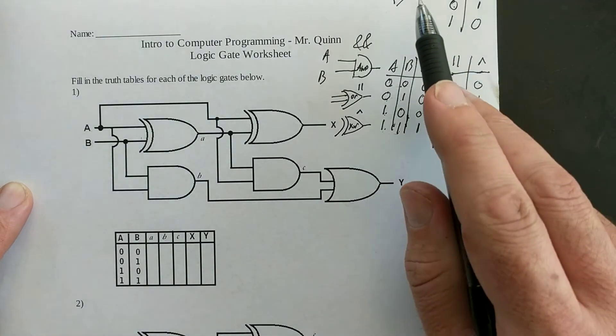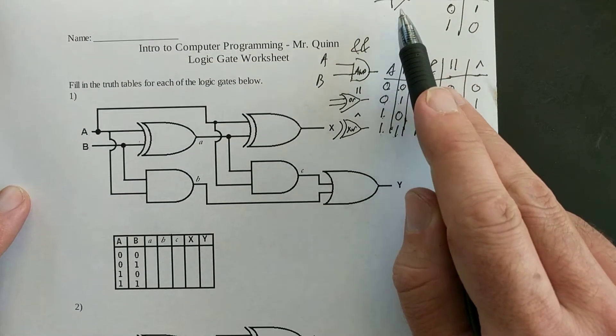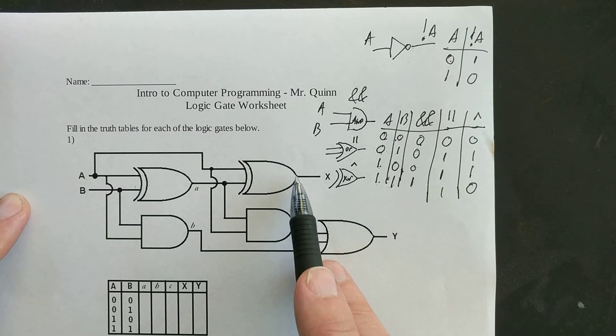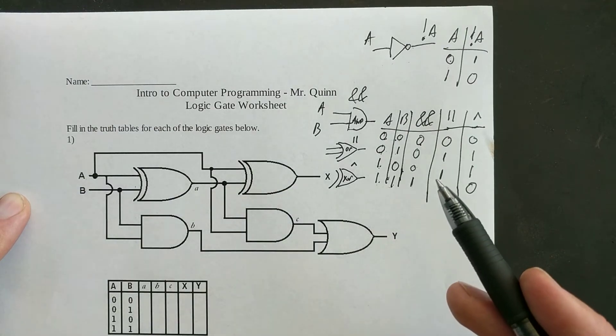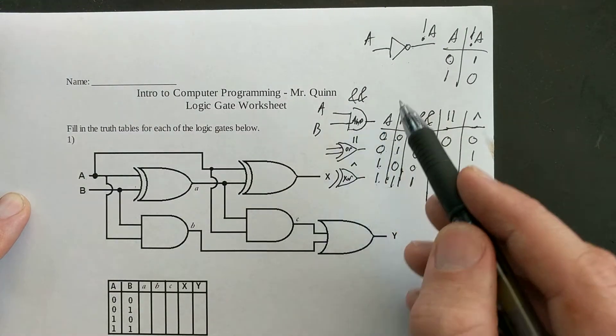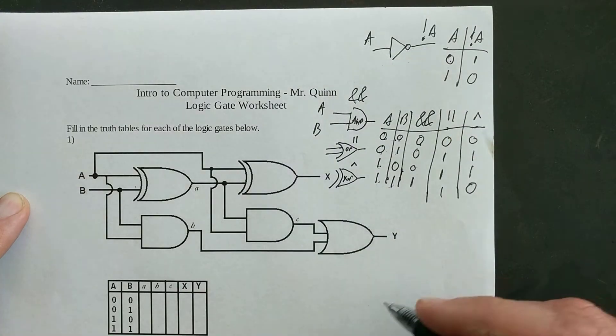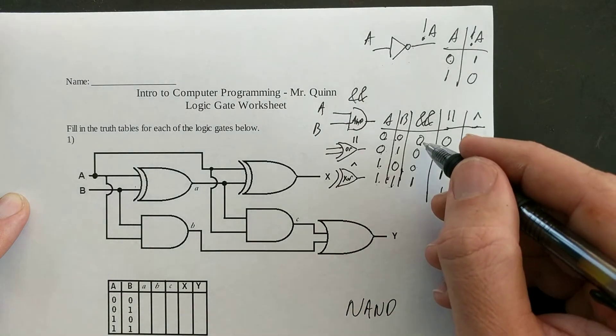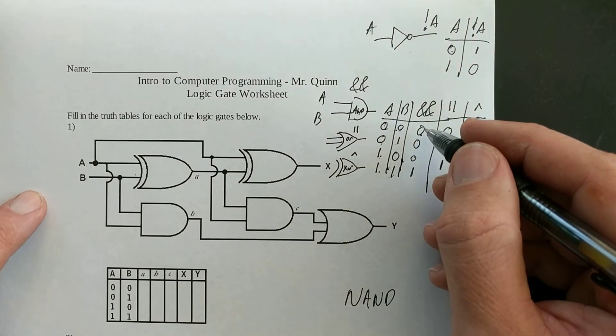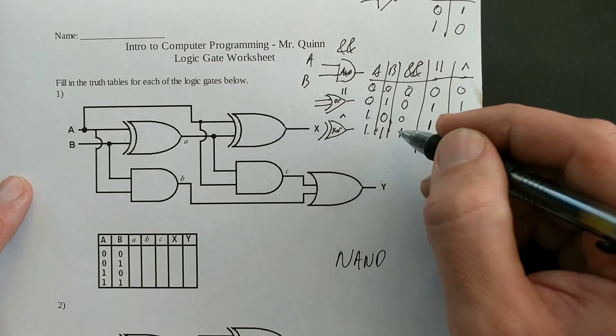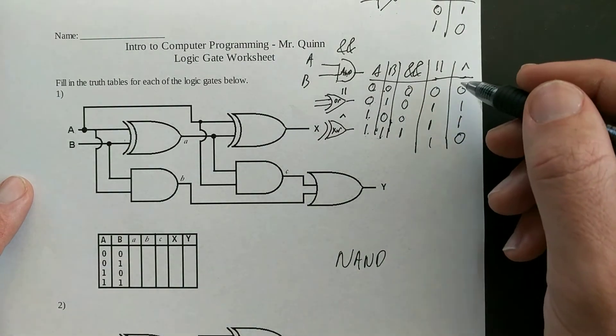Now what's interesting about that is I can always take a NOT gate and put it at the end of one of my logic gates to get the exact opposite results. So an AND gate plus a NOT gate becomes what's called a NAND gate, N-A-N-D. And a NAND gate has the exact opposite results of an AND gate. So instead of giving zero, zero, zero, one, it gives one, one, one, zero. The same thing goes for a NOR and a NEXOR.